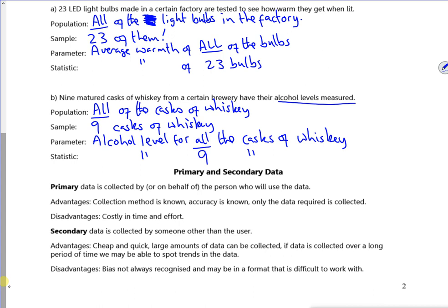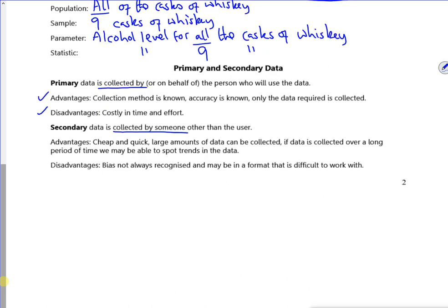It talks about primary and secondary data. Primary is something that you collect, secondary is something that you get from somebody else. The advantage of primary data is you know how well it's been collected, you've taken everything into account that you feel is appropriate. The disadvantage is you've got to do it, so it's costly in time and effort. For secondary data, the advantage is it beats the disadvantage of primary. You can get somebody else's data that they've spent three months doing, you've spent three minutes downloading it.